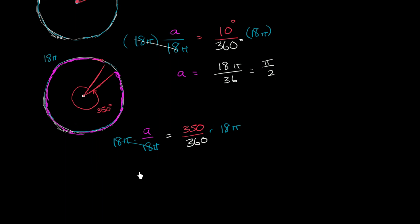So multiply both sides by 18π. We get A is equal to, let's see, this is 35 times 18 over 36π. So 350 divided by 360 is 35 over 36. So this is 35 times 18 times π over 36. Well, both 36 and 18 are divisible by 18, so let's divide them both by 18. And so we are left with 35 over 2π.